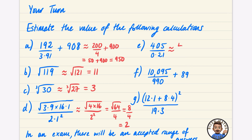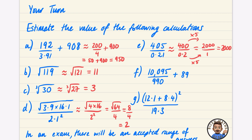For question (d) with the fraction: round the numerator — using √4 × 16 = √64 = 8, and the denominator 2² = 4, giving 8 ÷ 4 = 2. For question (e): 405 rounds to 400 and 0.21 rounds to 0.2; to get a 1 on the bottom, multiply top and bottom by 5, giving 2000 ÷ 1 = 2000. For question (f): 10,095 ≈ 10,000, 990 ≈ 1,000, and 89 ≈ 90.